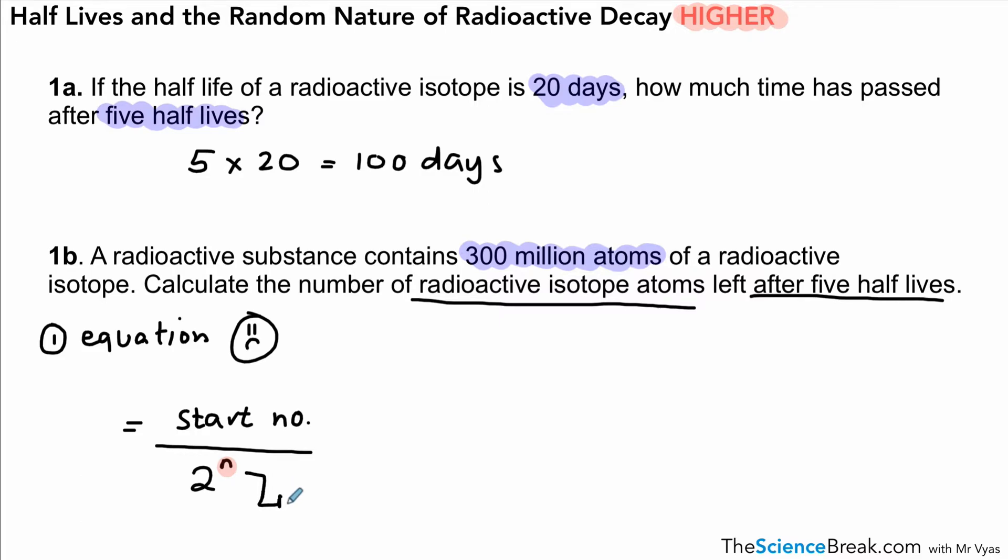This is not on your equation sheet and you're not required to learn it necessarily, but if you want to use this for questions like this you can. All we would do is put 300 million as our start number at the top and 2 to the power of 5 because five half-lives have passed. We'd work that out in our calculator and get an answer of 9,375,000—that's nine million three hundred and seventy-five thousand. That's the count rate after five half-lives have passed using an equation.